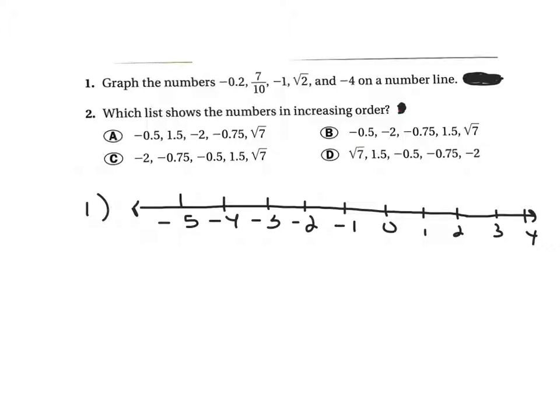One more of these. Number one here says graph all those numbers on a number line. The first one says negative point two, which is about one-fifth of the way to negative one, right there on the number line. The next one says seven-tenths, which is most of the way to one. Negative one obviously is right here.